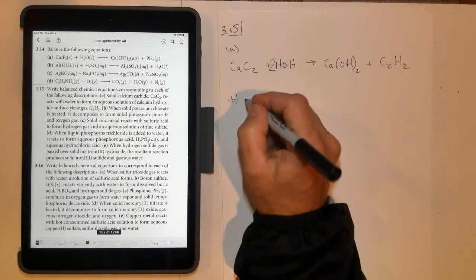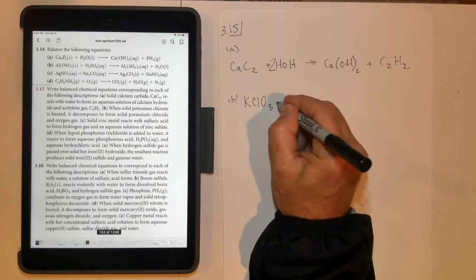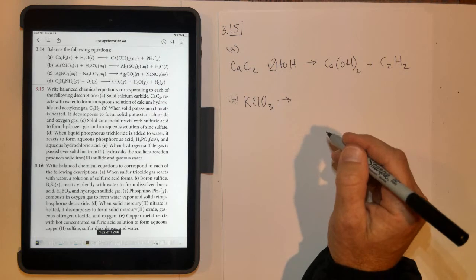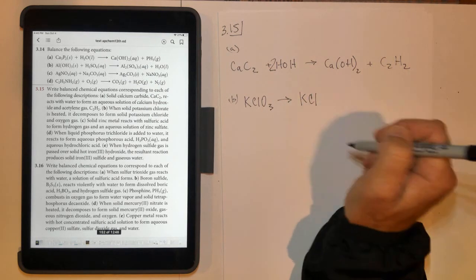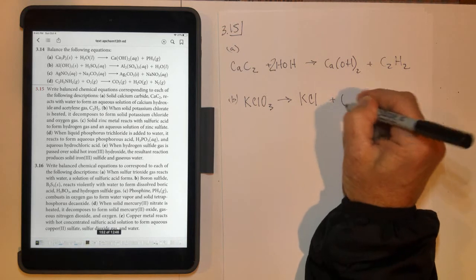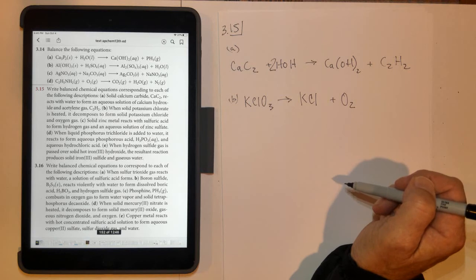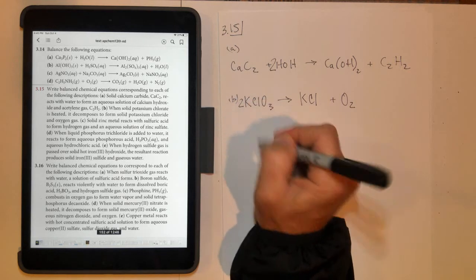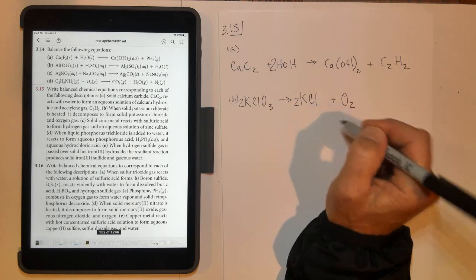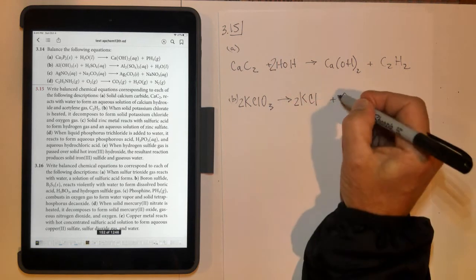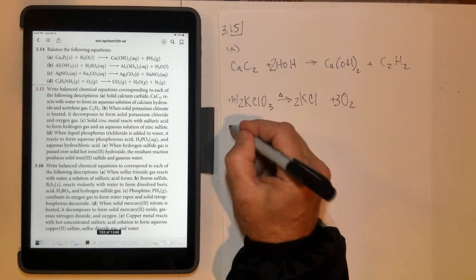Letter B, when solid potassium chlorate is heated, KClO3, it decomposes to form solid potassium chloride, KCl, plus 1, minus 1, and oxygen gas, O2. Don't forget it's diatomic. To balance this one, you're going to need a 2 here, and you're going to need a 2 right here to make sure that you've got an even number of those. Notice you've got 6 oxygens here, so you need a 3 here. Some books will put a triangle over the top of the arrow, meaning that it's heated.